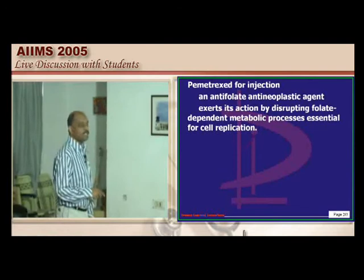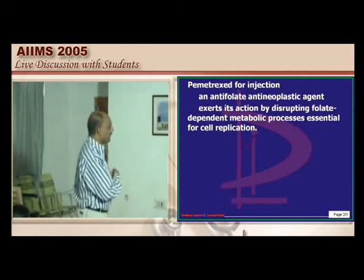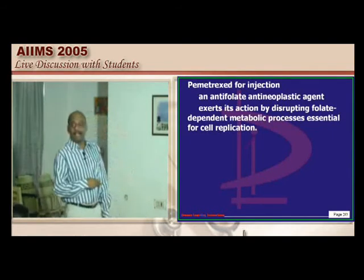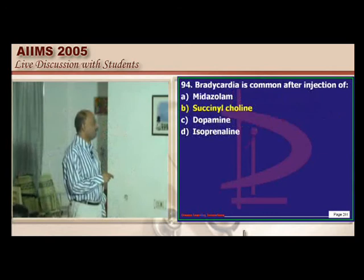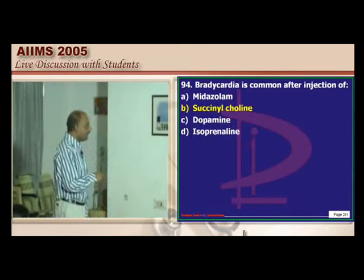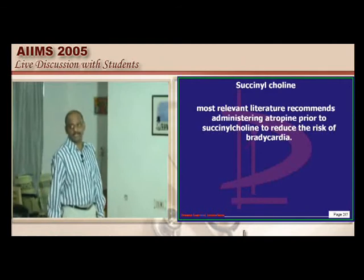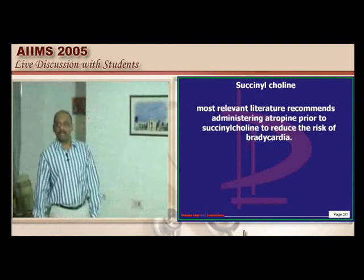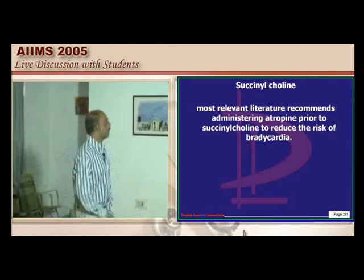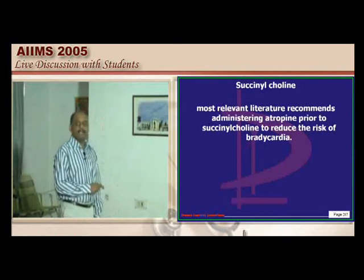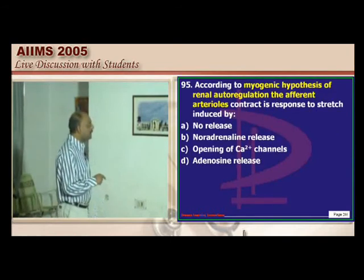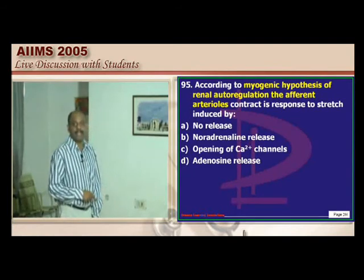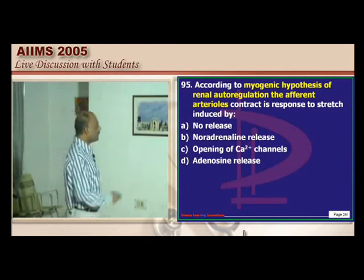Pemetrexed is a new agent used in cancer, including breast cancer. It is an antifolate antineoplastic agent that disrupts folate-dependent metabolic processes essential for cell replication. Succinylcholine can cause bradycardia — therefore in pediatric anesthesia, the important protocol is to administer atropine prior to succinylcholine to decrease the risk of bradycardia.